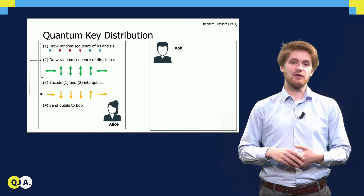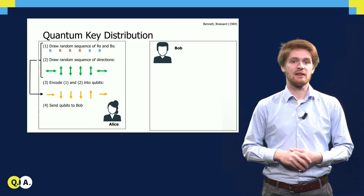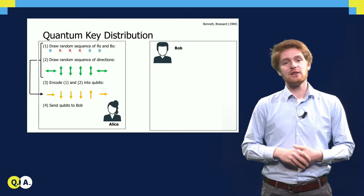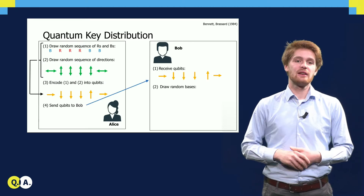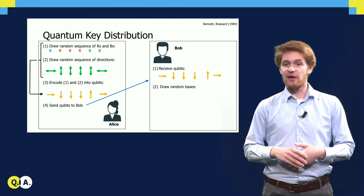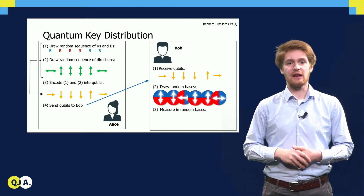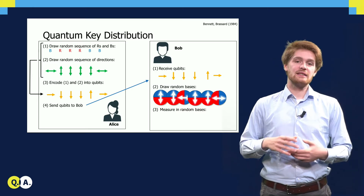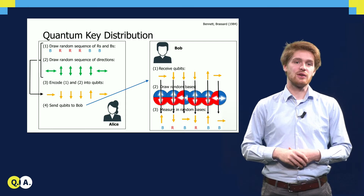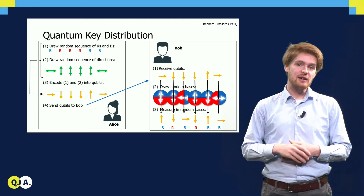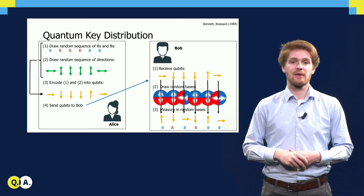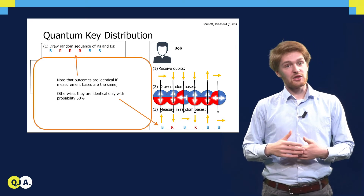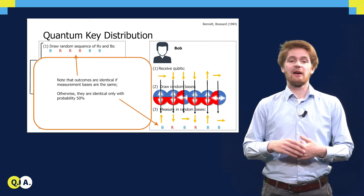For example, she turns blue plus horizontal into a right-pointing state, she turns red plus vertical into a down-pointing state, and so on for the remaining qubits. These qubits she then sends to Bob. Bob receives the qubits and draws a sequence of random measurement bases. Note that writing bases as a direction — as Alice does with green arrows — comes down to precisely the same thing as writing them as measurement bases on Bob's side. Bob then measures the qubits he received from Alice bitwise in his randomly chosen basis. Note that the outcomes Bob has are identical to Alice's initial randomly chosen bits in the case that Alice's chosen direction is identical to Bob's chosen measurement basis.